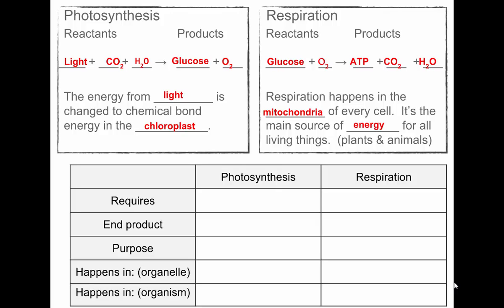A student asks if the order of reactants matters — not really, as long as they're on the correct side of the arrow. Review questions follow: photosynthesis requires light, water, and carbon dioxide. Respiration requires glucose and oxygen. Claudia confirms: we need glucose and oxygen for respiration.